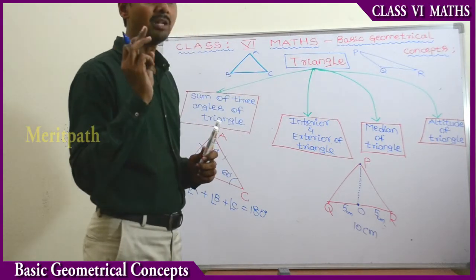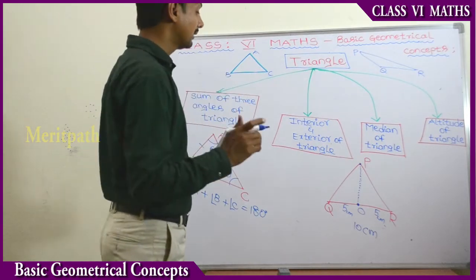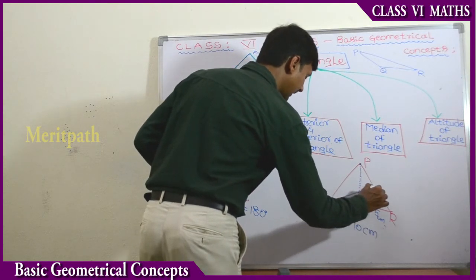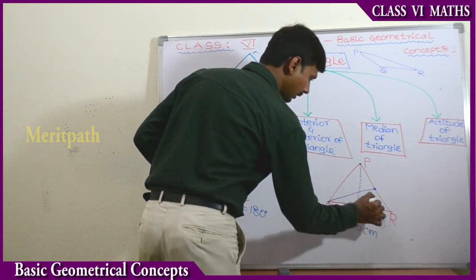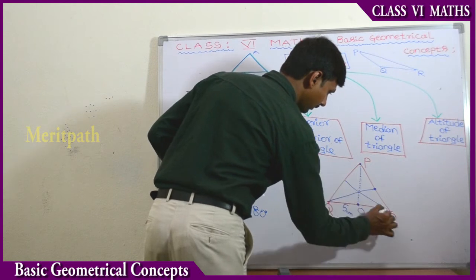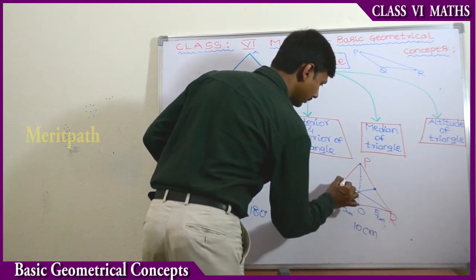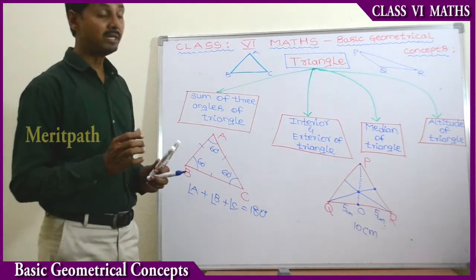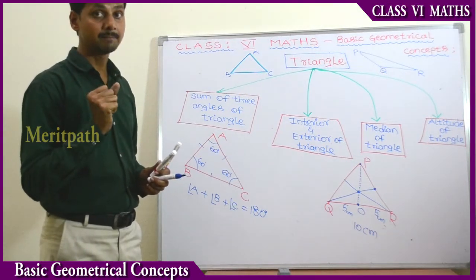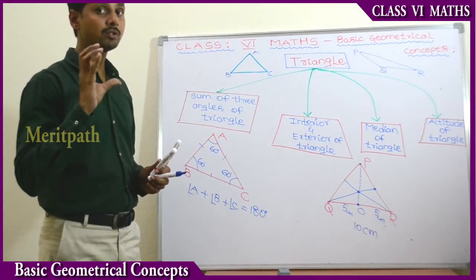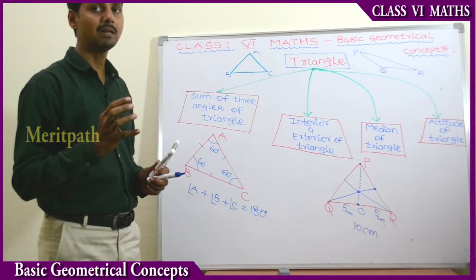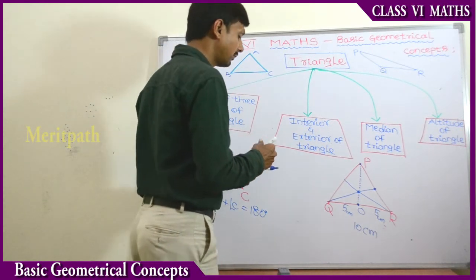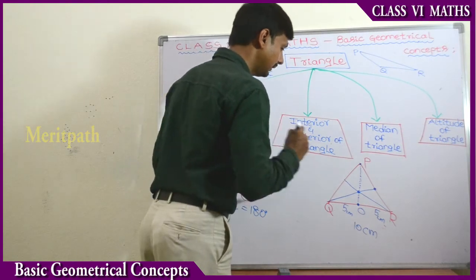We can draw 3 medians for a triangle — from vertex P, from vertex Q, and from vertex R. These 3 medians meet at one point, which is called the Point of Concurrence. The point where the 3 medians of the triangle meet is called the Centroid of the triangle, denoted by G.